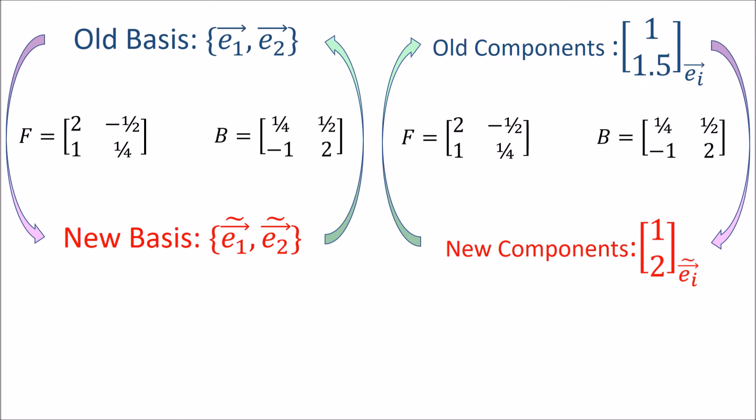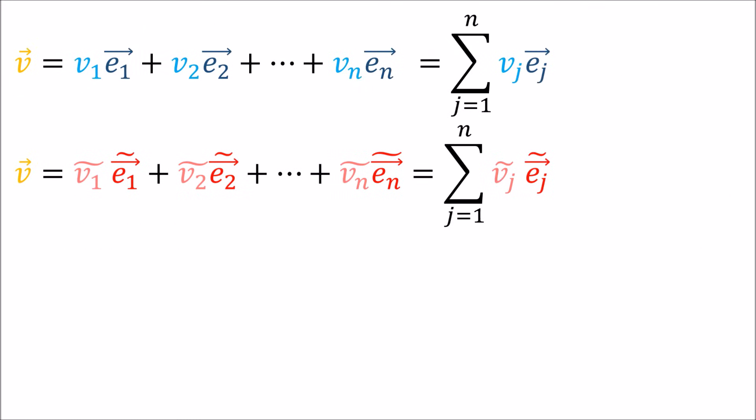Let's see if we can prove it in any dimension. So let's just recall that we have two ways of writing V. We can write it as a linear combination of the old basis vectors, with the coefficients being the old components. Or we can write it as a linear combination of the new basis vectors, with the coefficients being the new components. And we can also write these as summations, just to save some space.